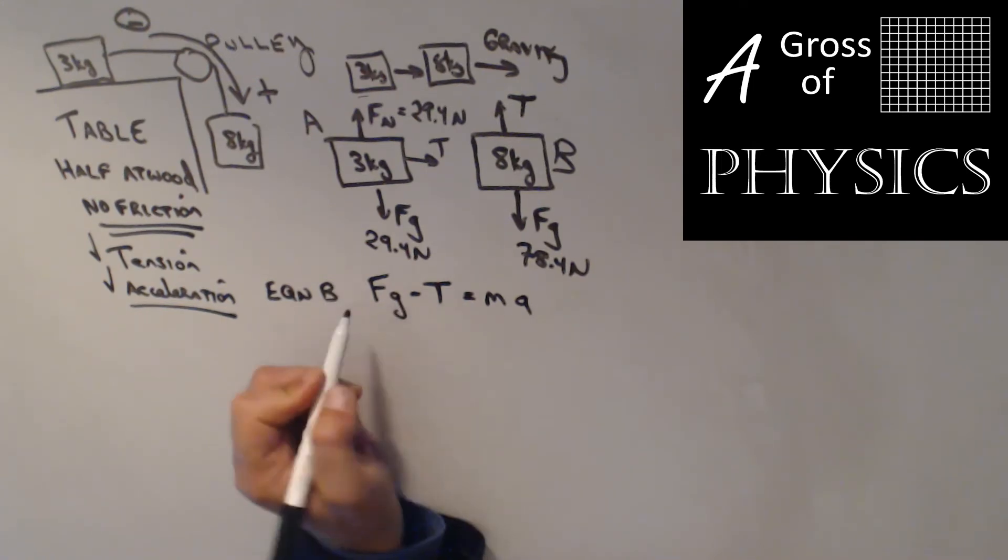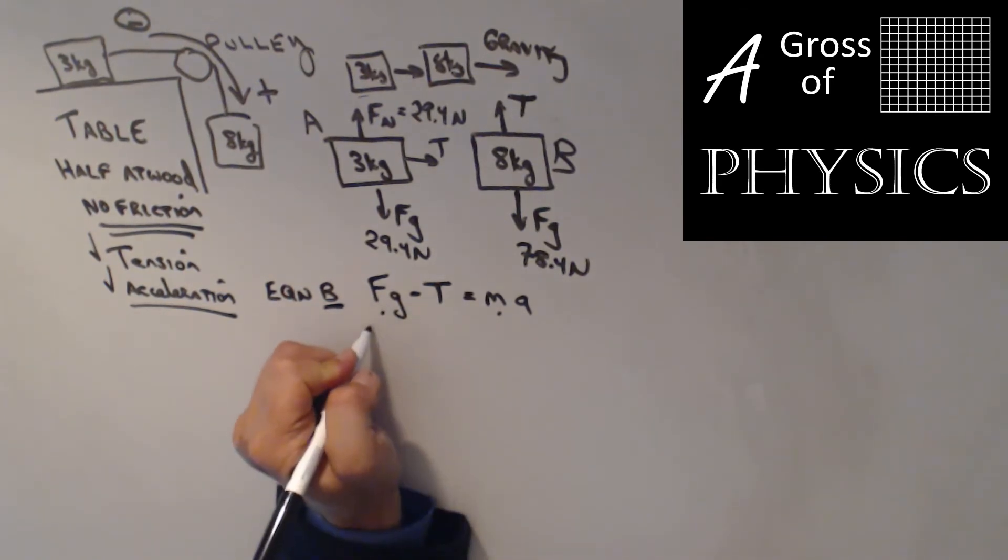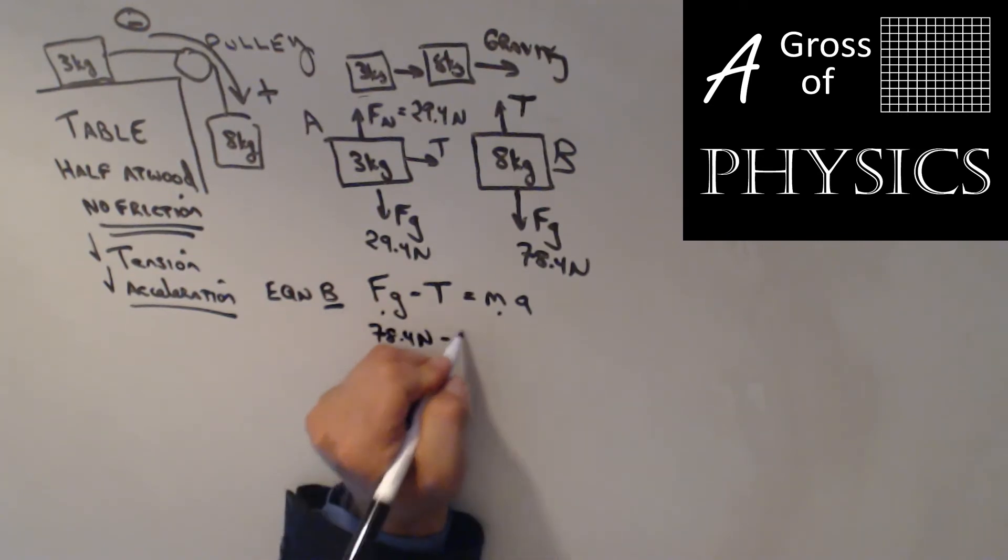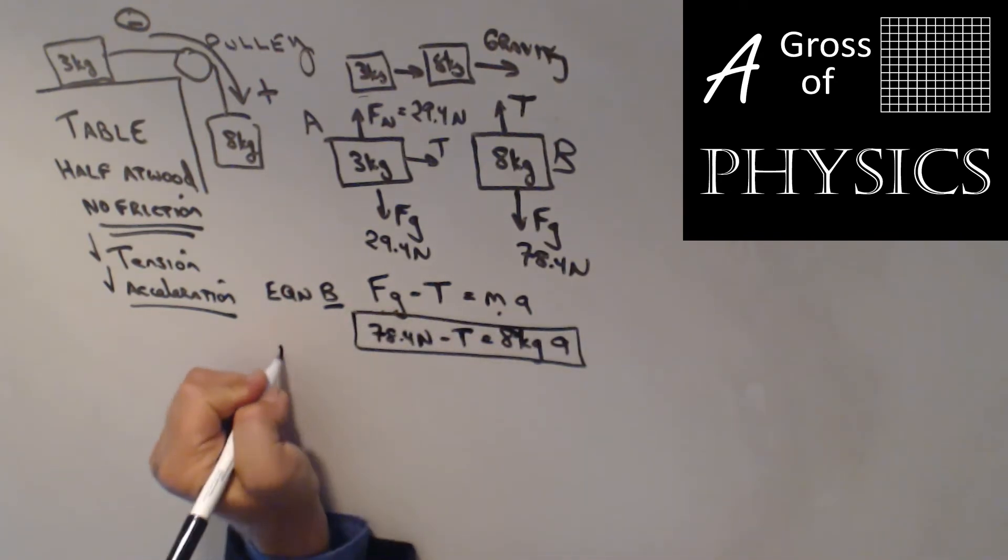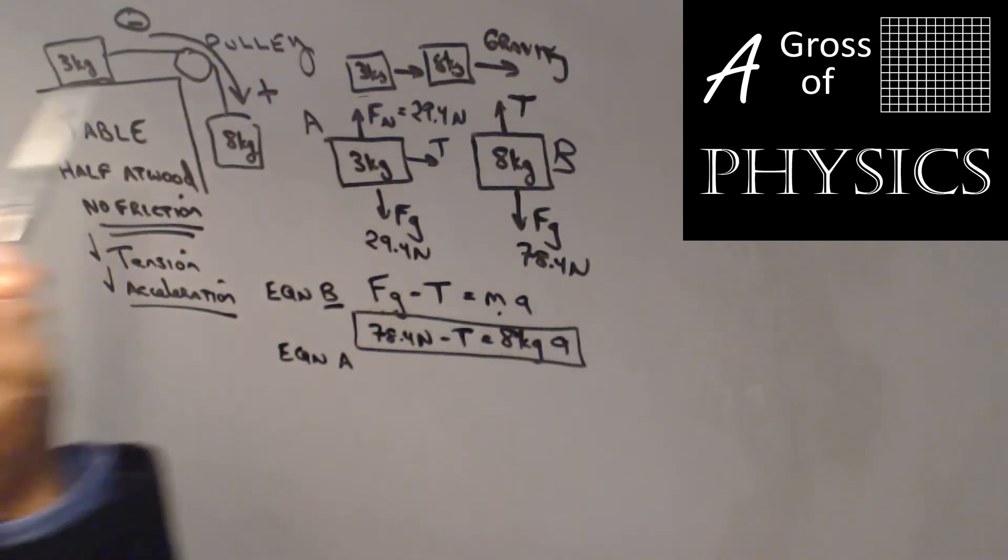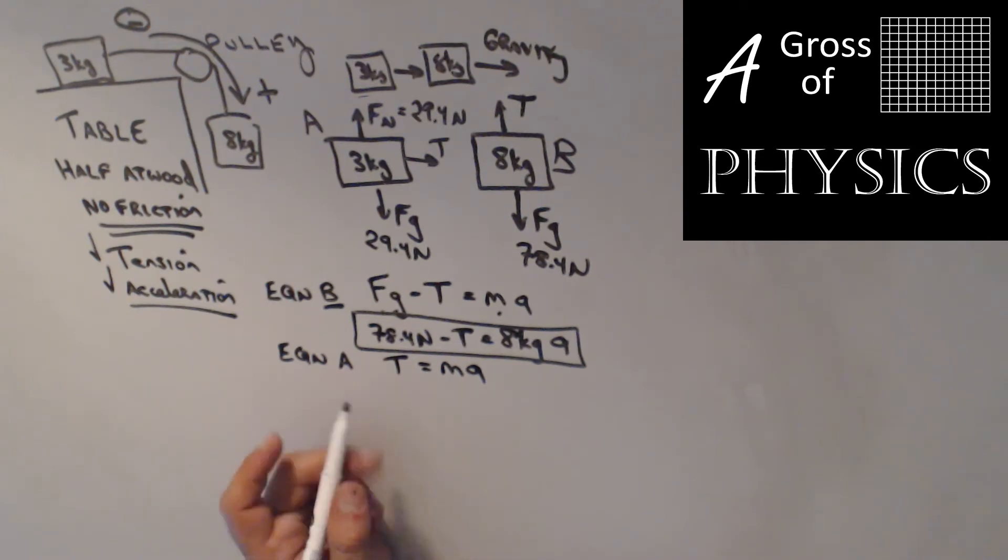Since we need to worry about equation B and A, the mass is 8 here and force of gravity is 78.4. I'll replace those with their actual values: 78.4 N - T = 8 kg × A. That's one equation. For equation A, the motion is sideways to the right, which is part of the clockwise direction. So T is your positive value. There's no other forces in the direction of motion, so T = MA. Since this is object A, the mass is 3 kg, so T = 3 kg × A.